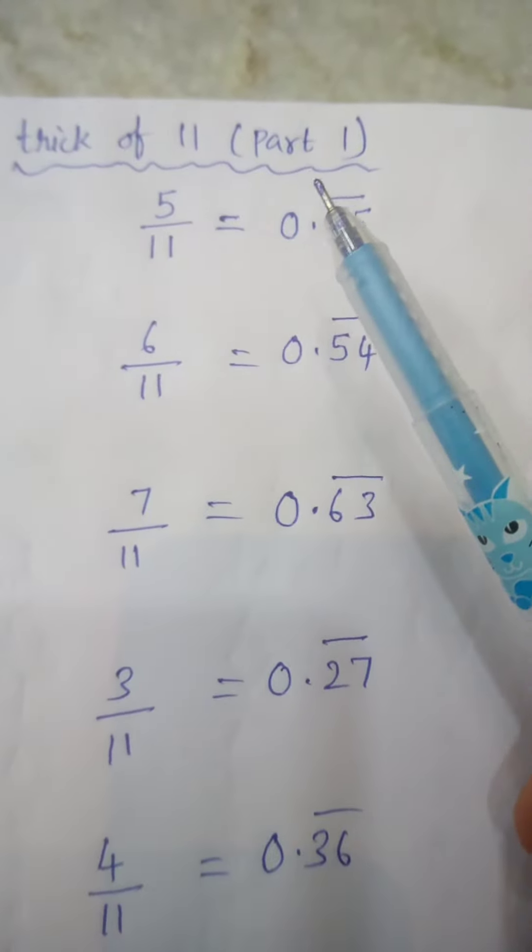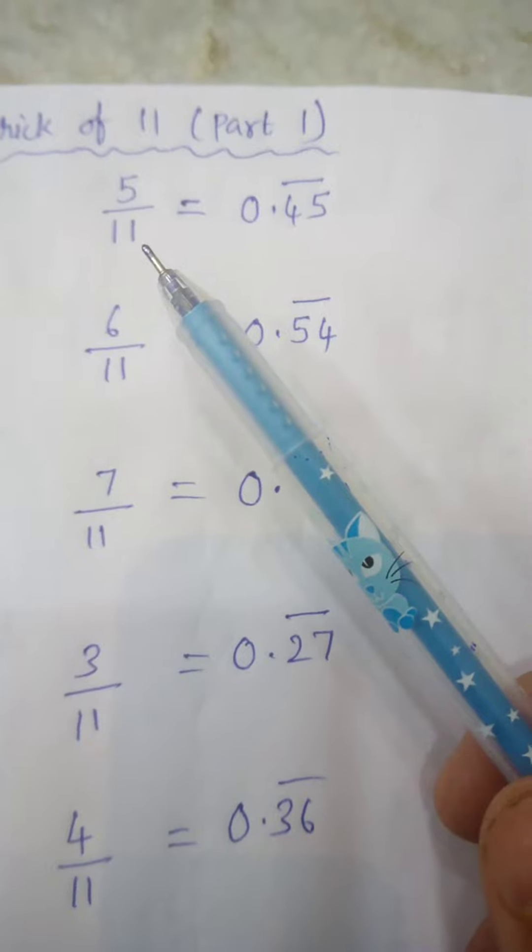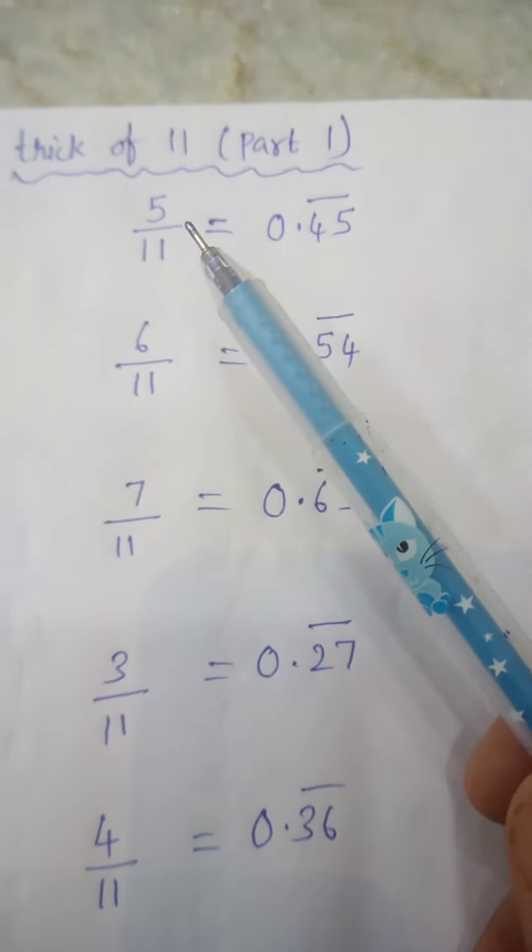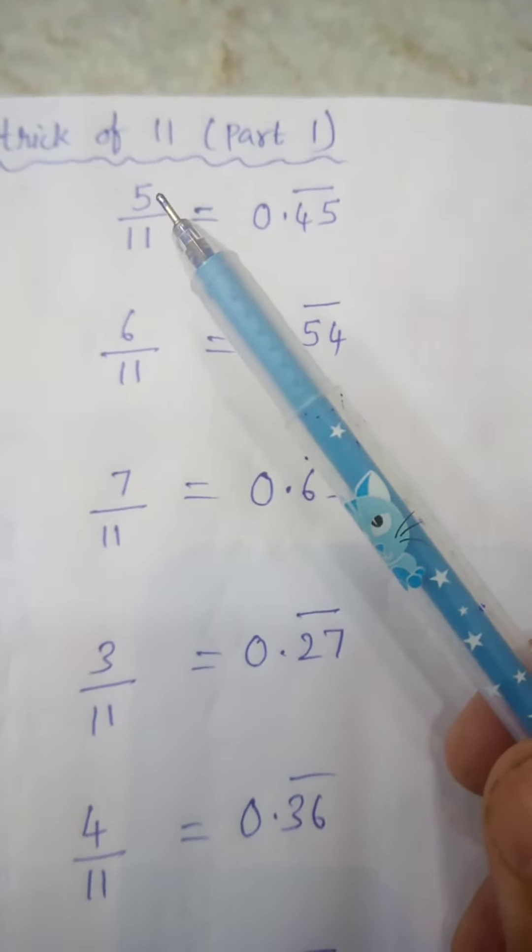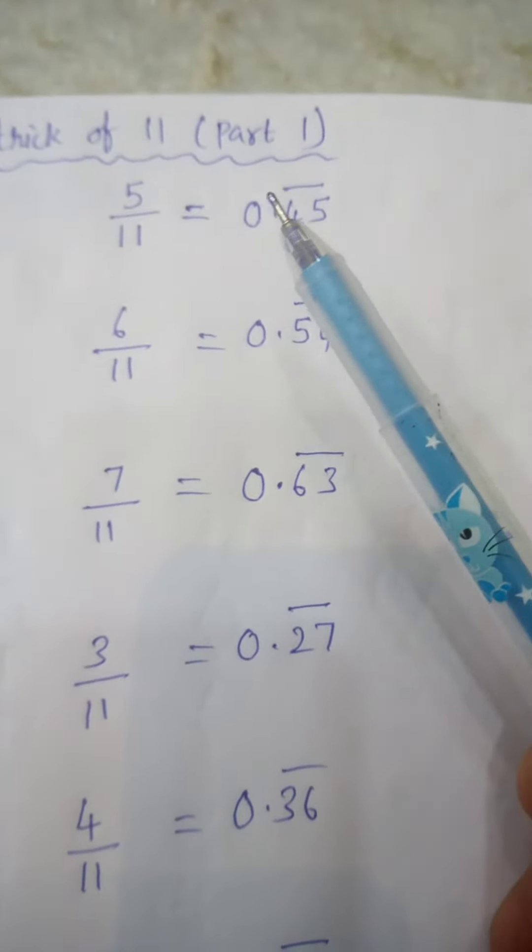Trick of 11, part 1. Whenever your number is divided by 11, what you have to do is multiply the numerator with 9. For example, 5 times 9 is 45, so you should write 0.45 bar.